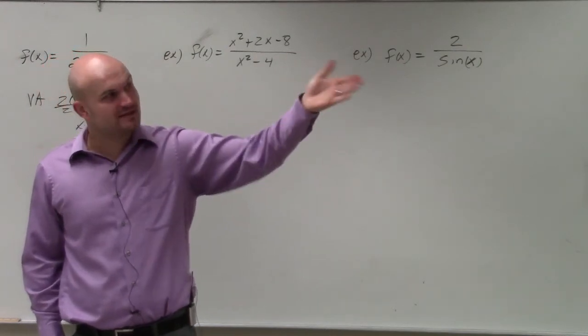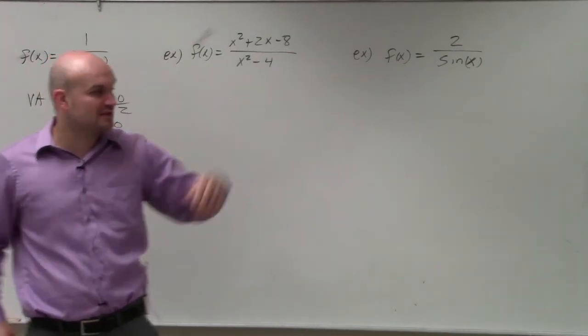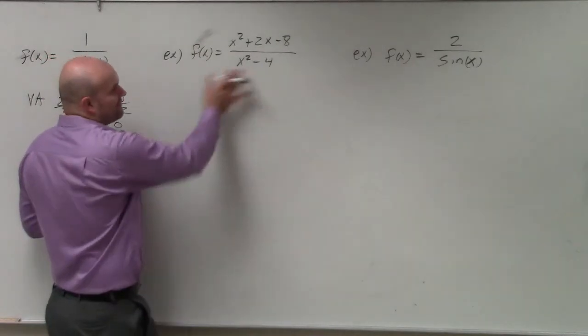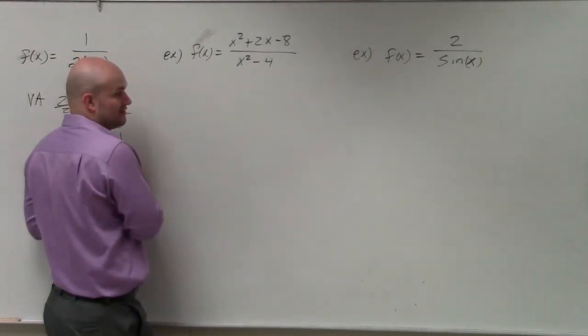Right? Holes, technically, a lot of times you're going to have removable unless you're looking at a jump. But to identify the vertical asymptote, we know we can't have the denominator equal to zero.